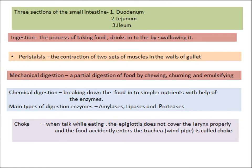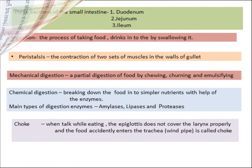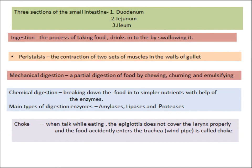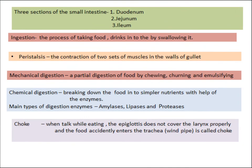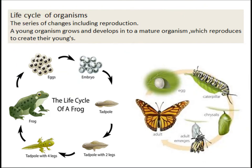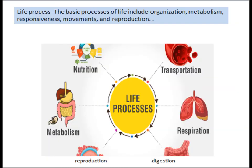There are two types of digestion: mechanical digestion and chemical digestion. The common characteristics of living organisms are: cellular organization, nutrition, respiration, excretion, movement, reproduction, growth and development. The basic processes of life are called life processes. Symbiosis is the close association between organisms of different species. The change of form of an organism during its life cycle is called metamorphosis.